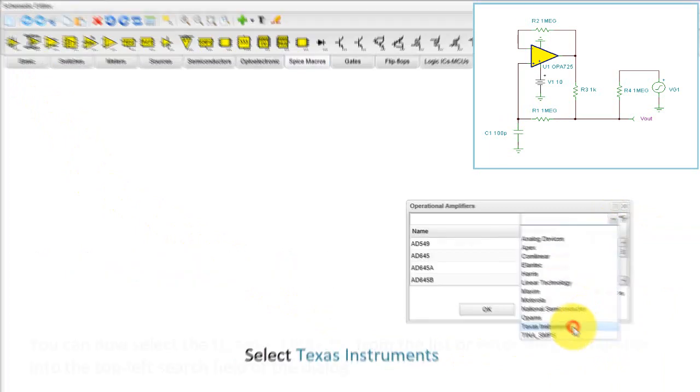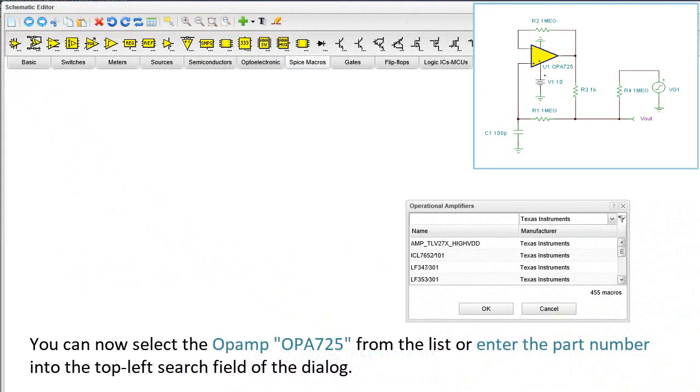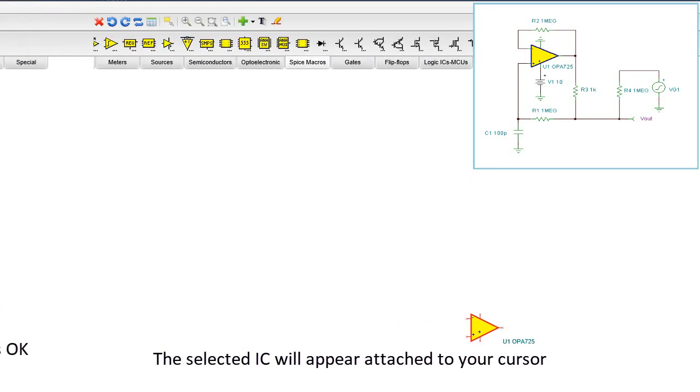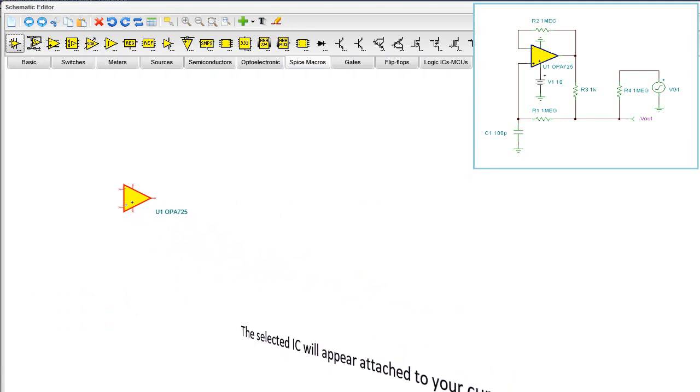Select Texas Instruments. You can now select the Op Amp OPA725 from the list or enter the part number into the top left search field of the dialog. Select OPA725 then press OK. The selected IC will appear attached to your cursor and place it anywhere on the workspace.